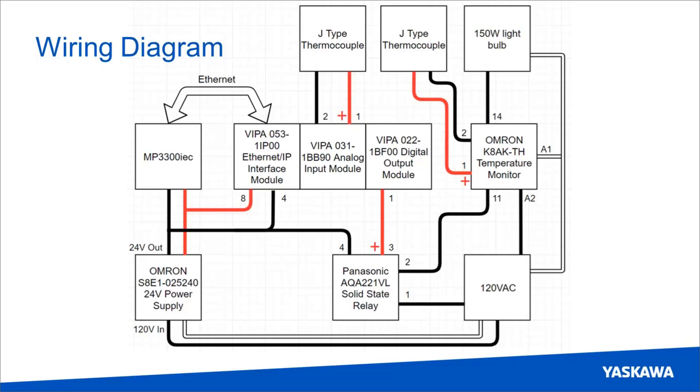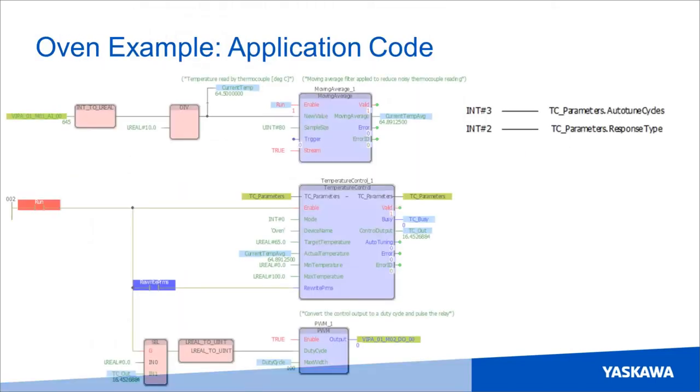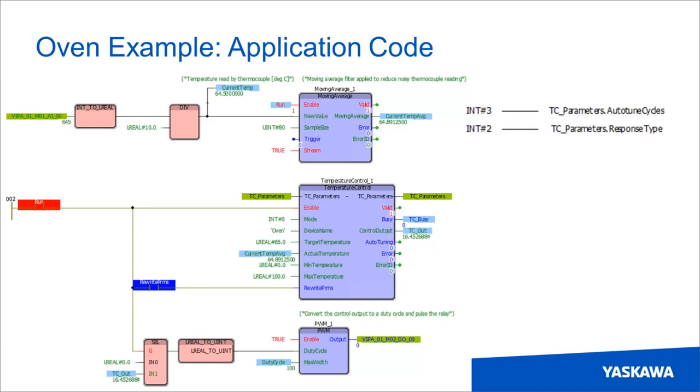So there's a good question on how would you set it up if you have two thermocouples in the same heat zone. So I'll go back to the application code. And you can see here's one temperature input. So I would probably duplicate that and then average the two temperature average values together and feed that into the temperature control block. So you'd still only have one temperature control block, but you might have two moving average filters for each temperature input and then do some math to average that final value and feed that in.